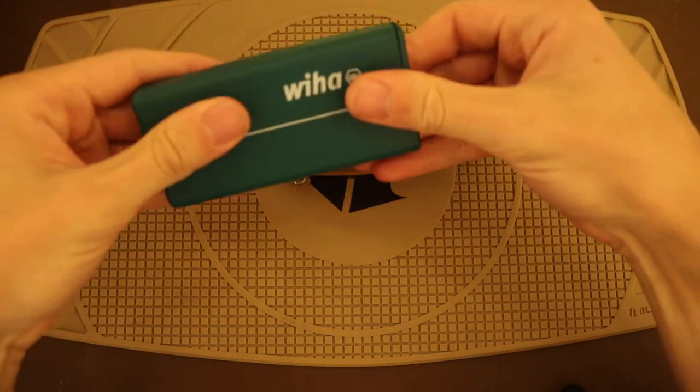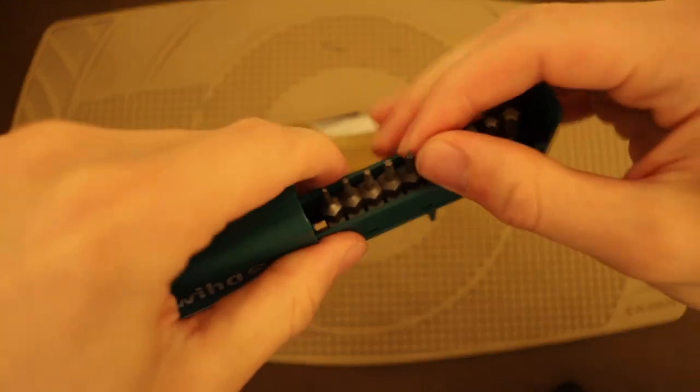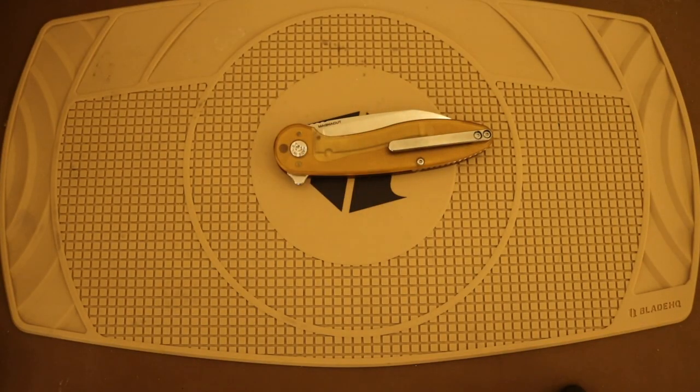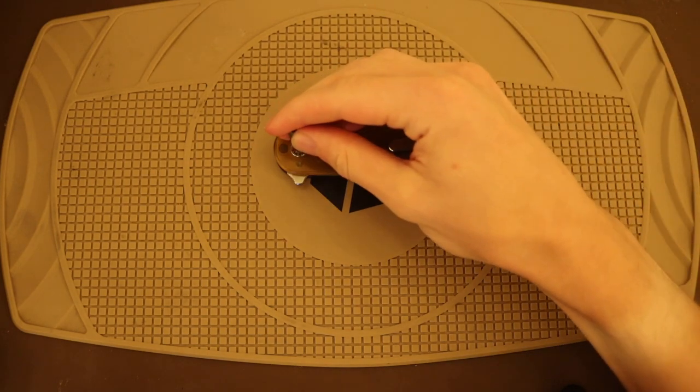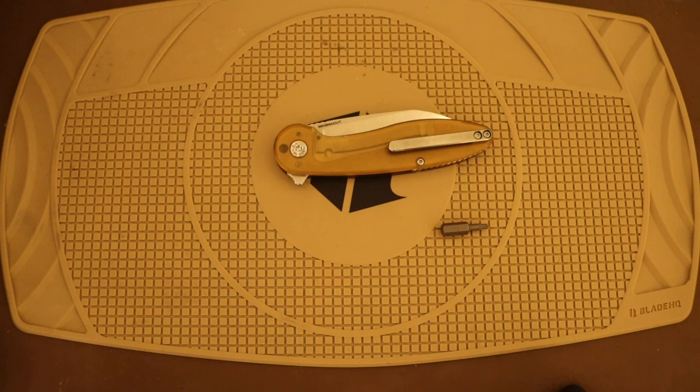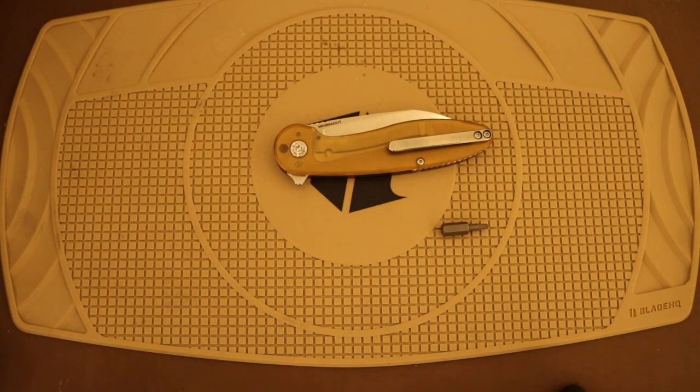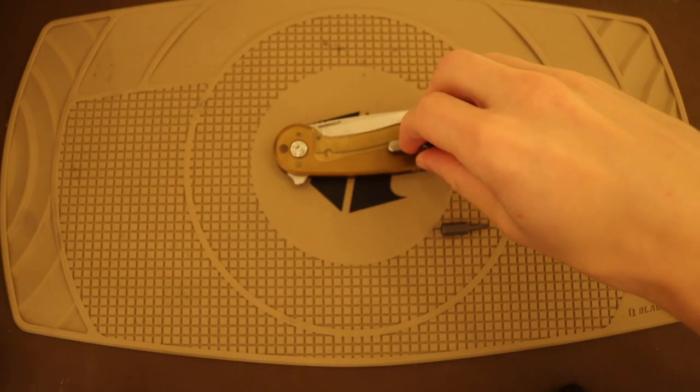So without any further ado, let's jump right into it with some basic Wiha Torx bits. First off, we are going to need probably, I'm guessing, a T10, and let me double check myself on that for this pivot here. Yeah, it looks like a T10 there. So we will need a T10.